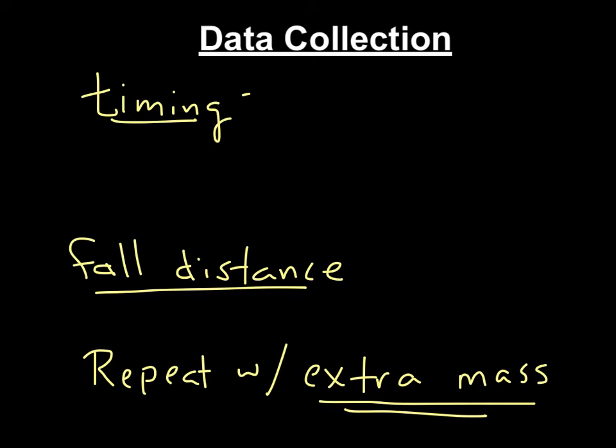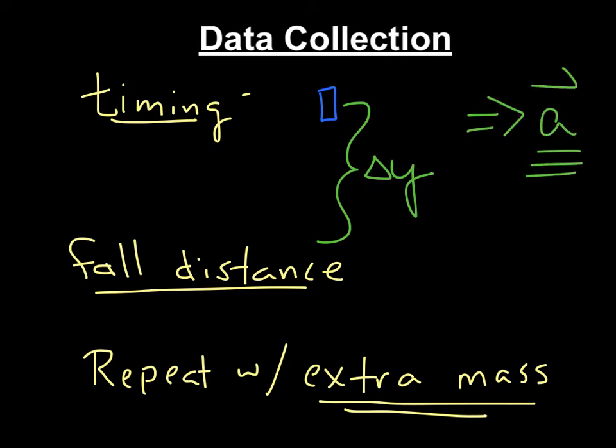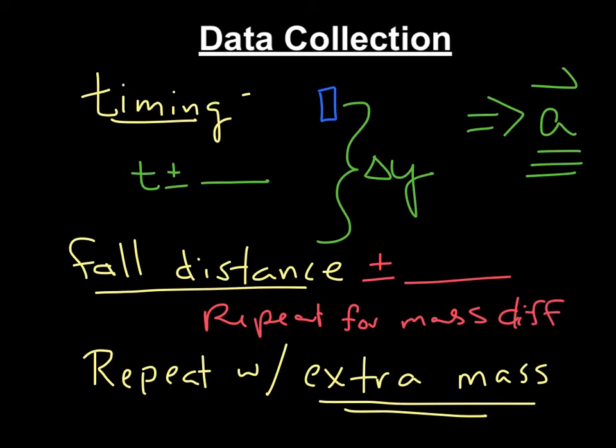So if we're looking at this, you've got this little mass. It is going to fall a distance delta y. And you can calculate acceleration from this. You will do this multiple times. You will have, timing will always have plus or minus. Your fall distance, you will measure this multiple times, so you will have plus or minus. And then after you do this, timing all your sets, so repeat for all your masses. Repeat for mass differences.